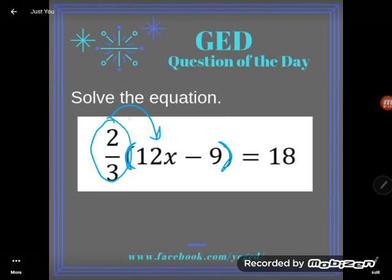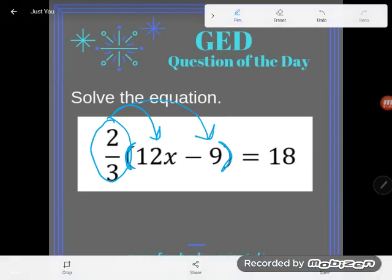I'm going to multiply both the terms in the parentheses by two-thirds. Now great news is you can use your GED calculator if you were doing this on the test, so you don't have to actually know how to multiply fractions by hand. But I know how to multiply fractions by hand, or you could type this into your calculator.